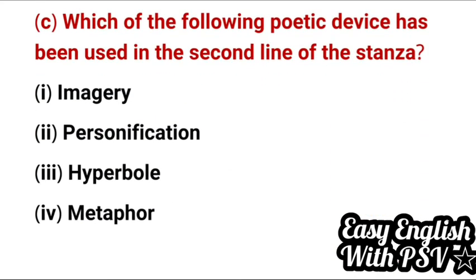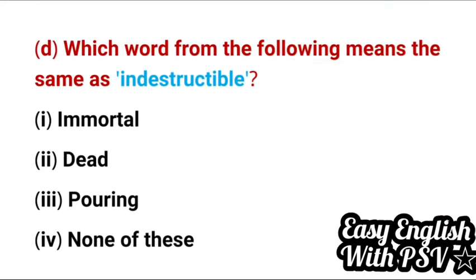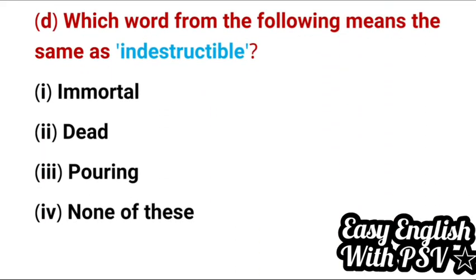Question 3: Which poetic device has been used in the second line of the stanza? Correct answer: hyperbole. Question 4: Which word from the following means the same as 'indestructible'? Something that cannot be destroyed — the answer is: immortal.